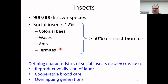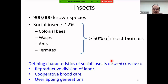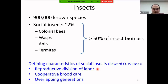Edward O. Wilson — called the Darwin of the 21st century, Harvard professor emeritus — dedicated his entire career to social insects. He characterized social insects by reproductive division of labor, cooperative brood care where everybody cares for the young, and overlapping generations where teenagers stay and contribute to the colony's benefit and are willing to die for it.